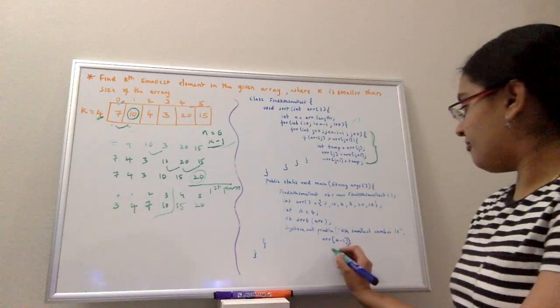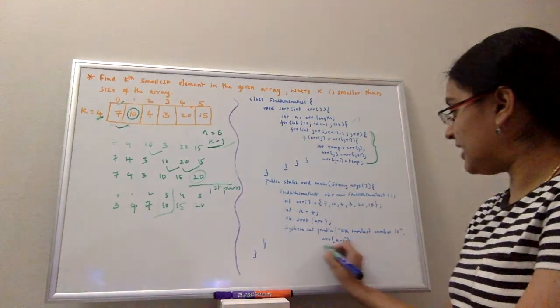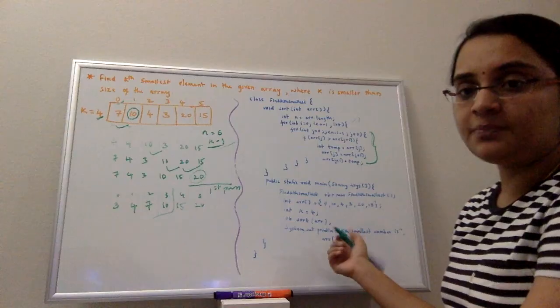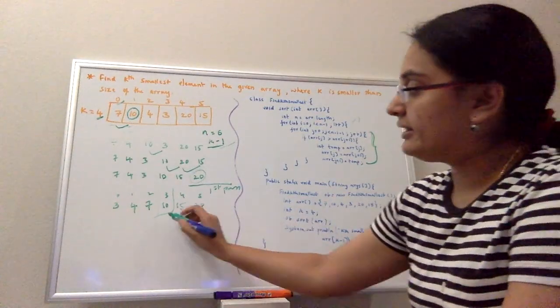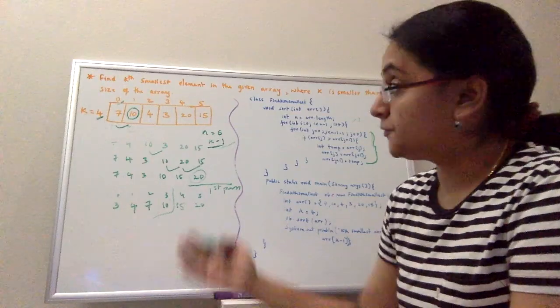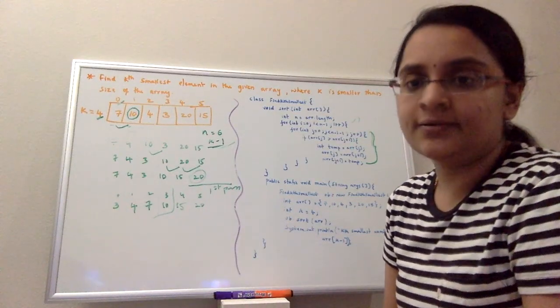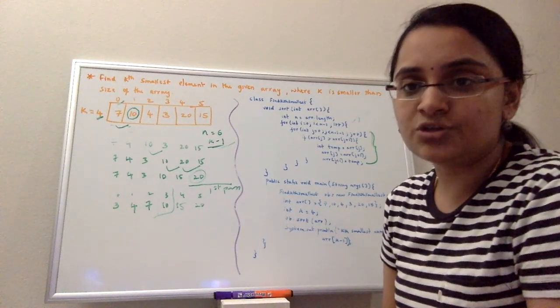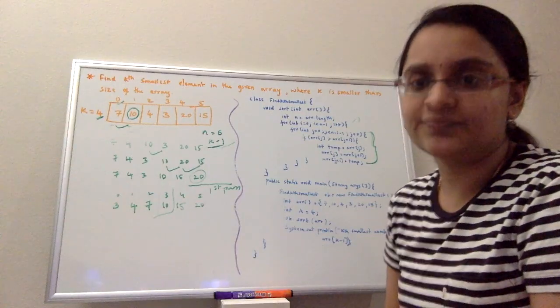I'll just print out what is my k minus 1th element using a print statement and telling that yes, 10 is my fourth smallest element for this particular array. So this is my solution to this problem. Thank you.